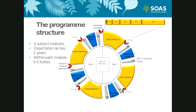Here we can see a visualisation of your two-year programme. During these two years, you will take four subject modules, each beginning either in April or October. One of these is the core module which all students take, and the other three are selected from a range of options which Sarah has outlined. You also undertake a 15,000-word dissertation spanning the two years of your programme, and there are four dissertation study periods in between the subject modules dedicated to developing your research and methodology skills.